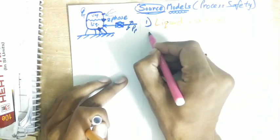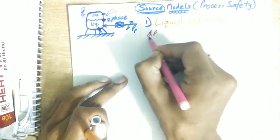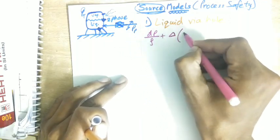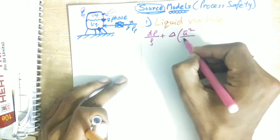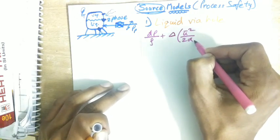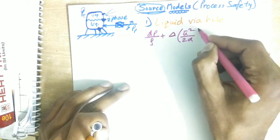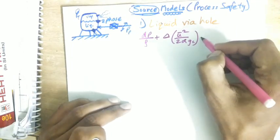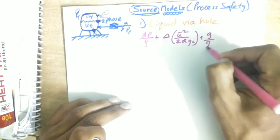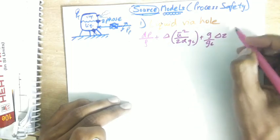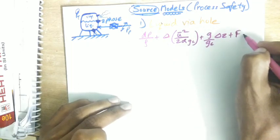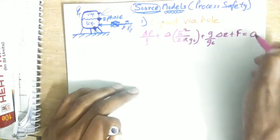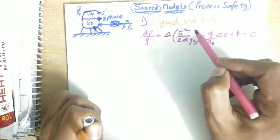Here we will use Bernoulli equation: dP/ρ + Δu²/2α - α is the kinetic energy correction factor, we're considering SI units so gc would be one - plus g/gc Δz + F.